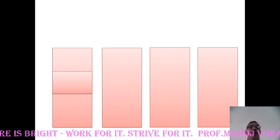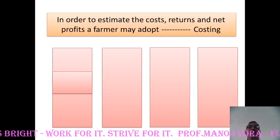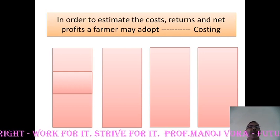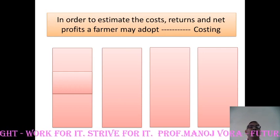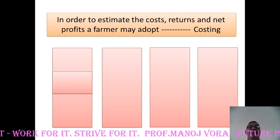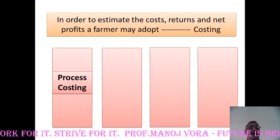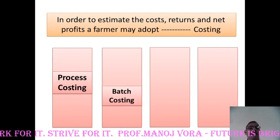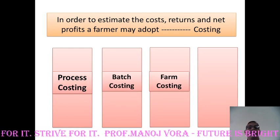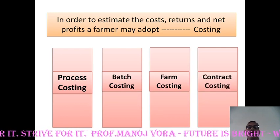Your next question: in order to estimate the costs, returns, and net profits, a farmer may adopt dash costing. Your options are process costing, batch costing, farm costing, or contract costing.